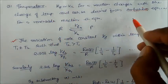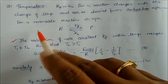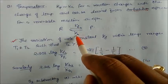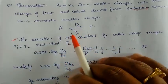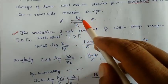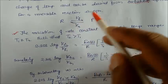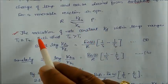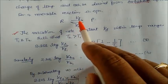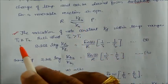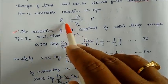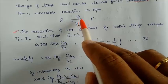Consider a reversible reaction with reactants forming products. The equilibrium constant of the forward reaction is Kf and of the backward reaction is Kb. Both depend on temperature, so at two different temperatures T1 and T2 (where T2 > T1), Kf takes different values — Kf1 at T1 and Kf2 at T2.